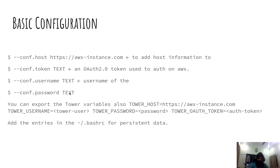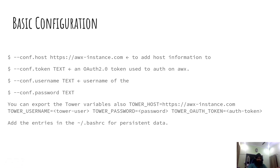There are also environment variables you can define so you don't need to pass these parameters every time. The variables are 'TOWER_HOST', 'TOWER_USERNAME', 'TOWER_PASSWORD' for providing the instance URL and credentials, and 'TOWER_AUTH_TOKEN' if you prefer token-based authentication. For persistent data, just add these environment variables to your bashrc so they are loaded every time you log in.